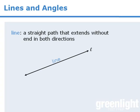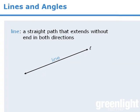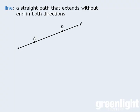To begin, a line can be thought of as a straight path that extends without end in both directions. A finite portion of a line is called a line segment, so here AB is a line segment.